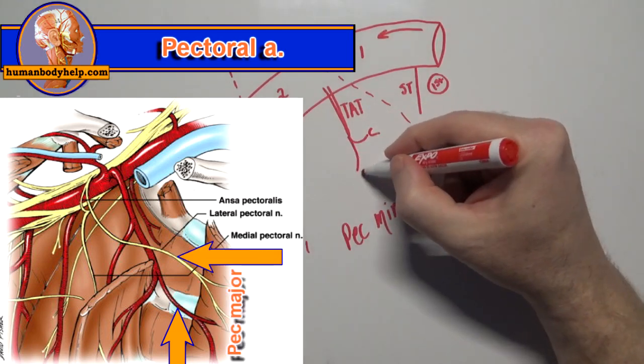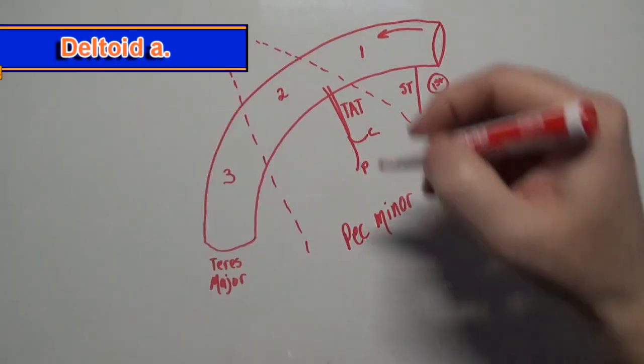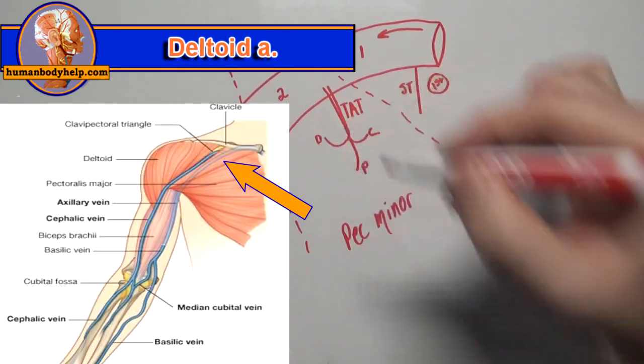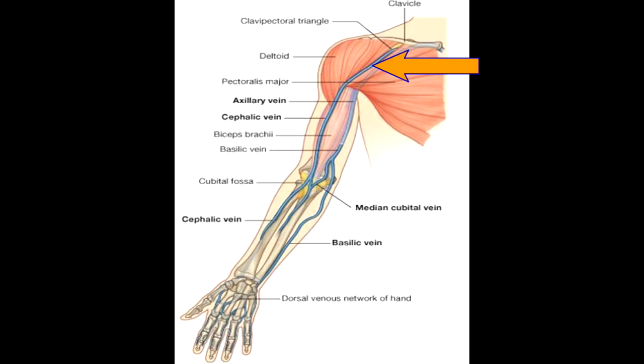The deltoid artery, which runs between the clavicular head of the pec major and the anterior edge of the deltoid, where the cephalic vein runs.